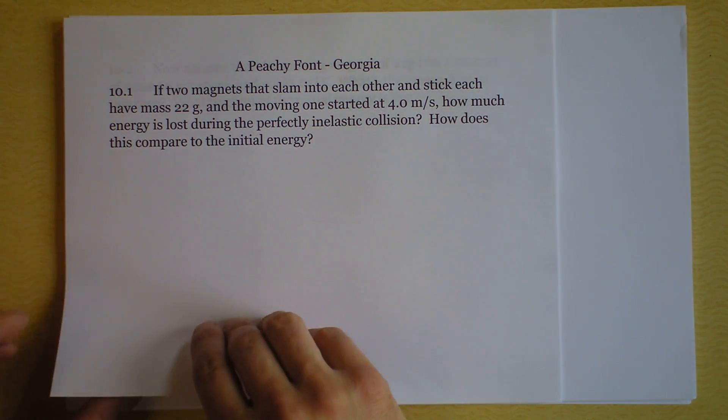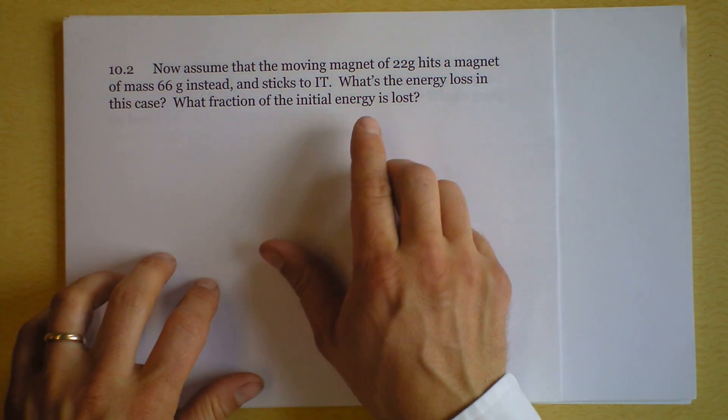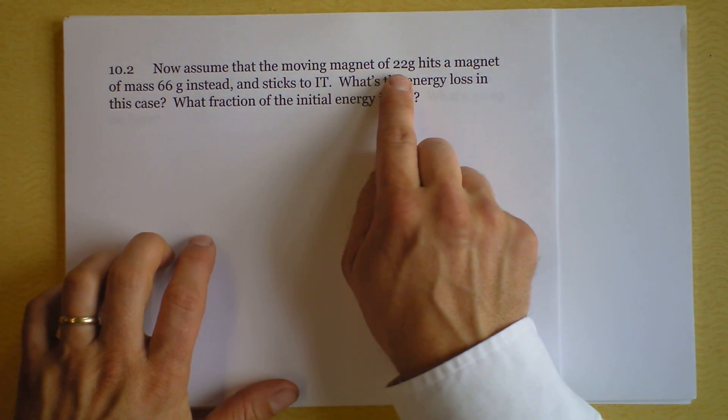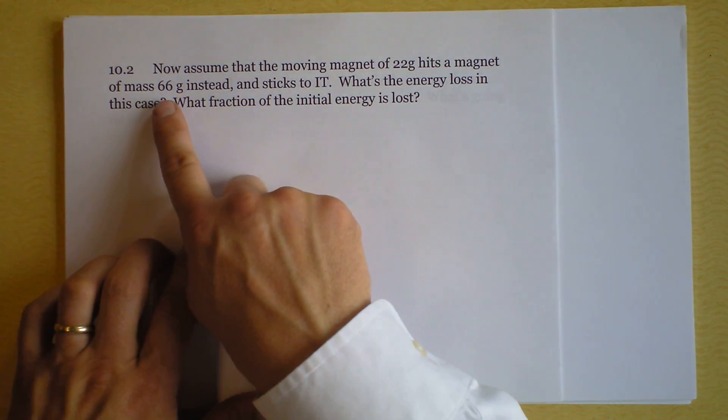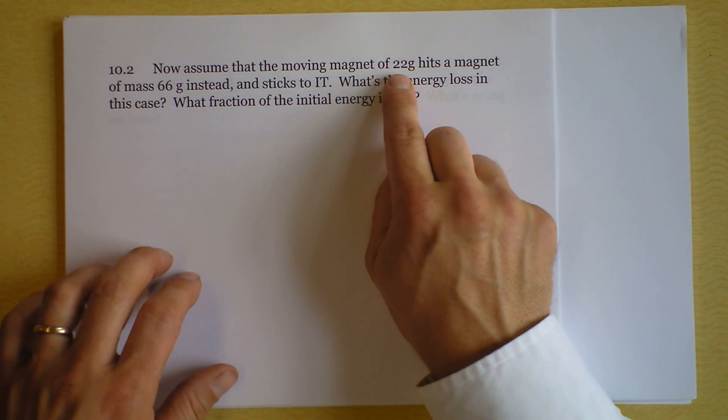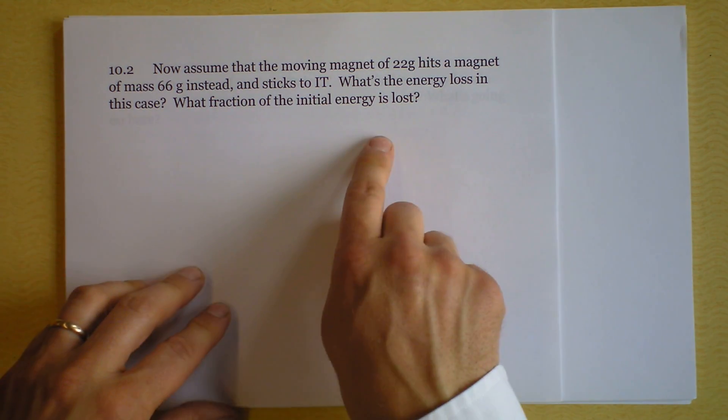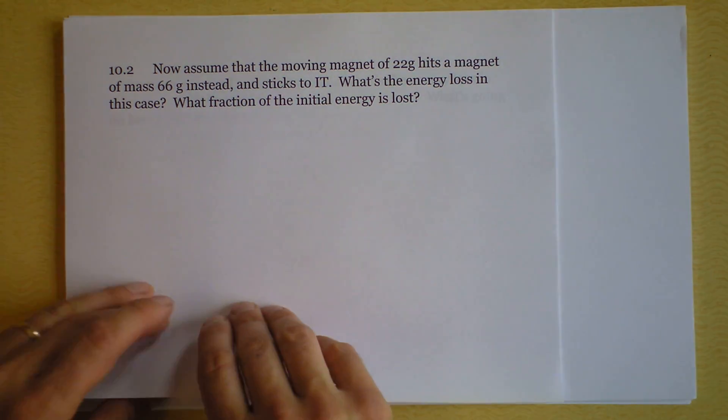And the next problem is carrying along the same idea. We've still got the four meter per second initial motion. But the moving magnet, 22 grams, hits a magnet that's much more massive, three times its mass. So that means that initially one quarter of the mass is moving and three quarters of it is at rest. I'm looking to try to find what fraction of the energy is lost.